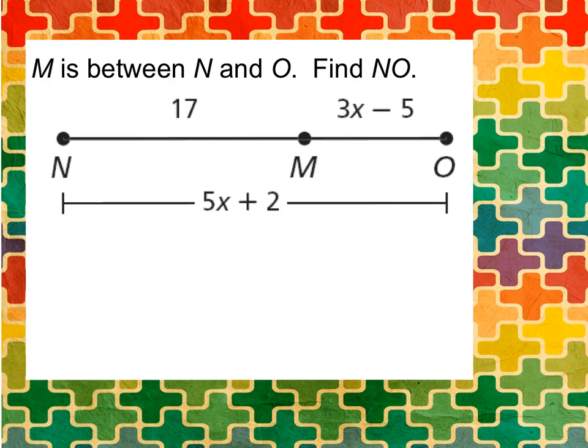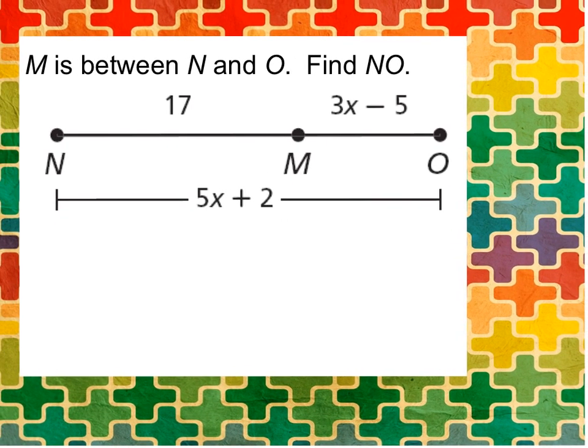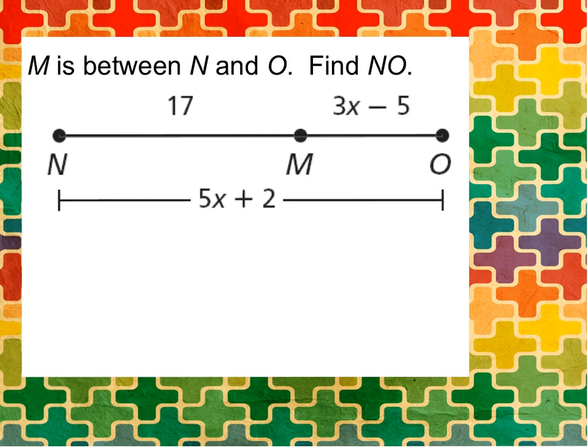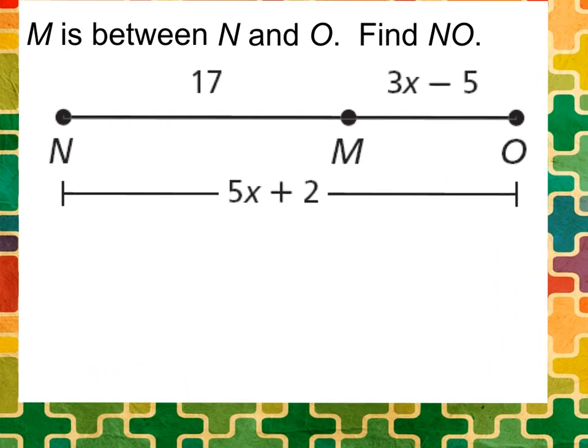Let's practice an example together. M is between N and O, so we have N and O and M is right here in between it. It's not the midpoint and we'll talk about that in the next video, but it is in between. They want us to find the distance of NO, so that means the total distance here. The first thing we need to do is set up an equation.